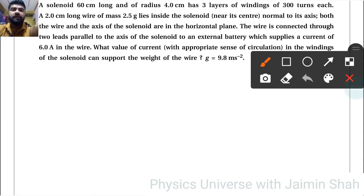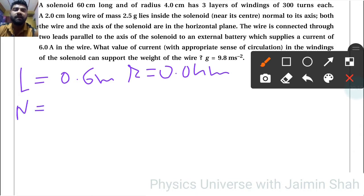A solenoid 60 centimeters long, so L equals 0.6 meters, and radius r equals 0.04 meters, has three layers of winding, so the total number of turns are 900, three into 300.